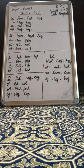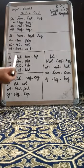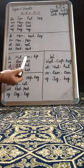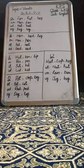The third vowel is I. The sound of vowel I is 'ih'. Let's see some words having the vowel I: Hit, Bin, Lip.